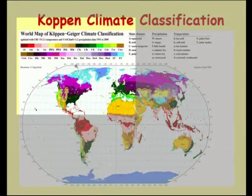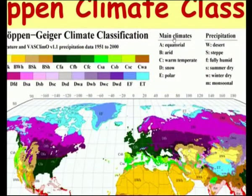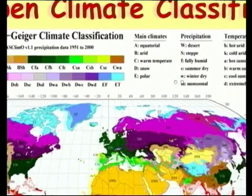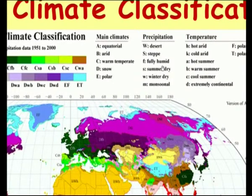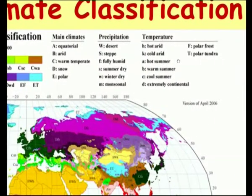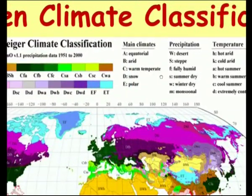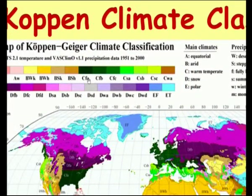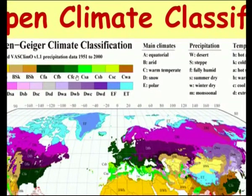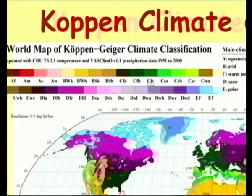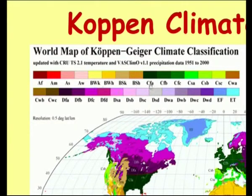Let us restart with the Köppen climate classification already discussed. The major climates are equatorial, arid, warm temperature, snow and polar. The precipitation categories are desert, steppe, fully humid, summer dry, winter dry and monsoonal. The temperature categories are hot arid, cold arid, hot summer, warm summer, cool summer, extremely continental, polar frost and polar tundra. Each climate zone is represented by three letters: the first for the climate name, the second for rainfall, and the third for the temperature region. In the first episode we discussed A, B and C. Today we will discuss D and others.